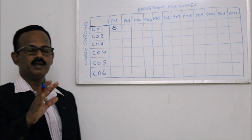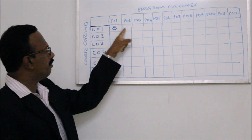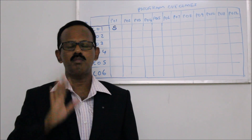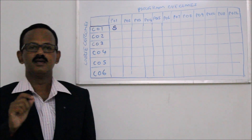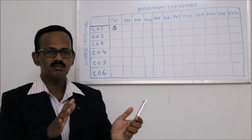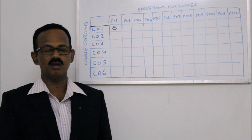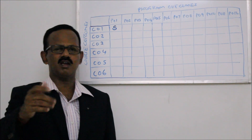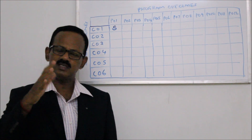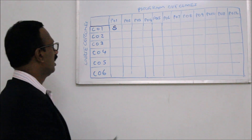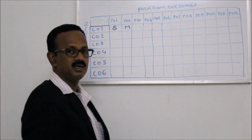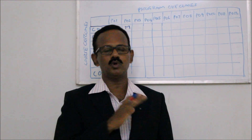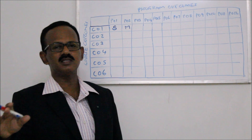Now take the second program outcome, which is problem analysis — that is, problem solving. If you feel that this course outcome has something to do with problem solving and there is a moderate correlation, you put M; if it is strong, you put S; and if it is weak, you can leave it blank, because otherwise the entire table will get filled. If course outcome 1 also has something to do with design and development, and there is more design and development content relating to program outcome 3 — design and development of solutions — then I will leave PO3 blank in this example.